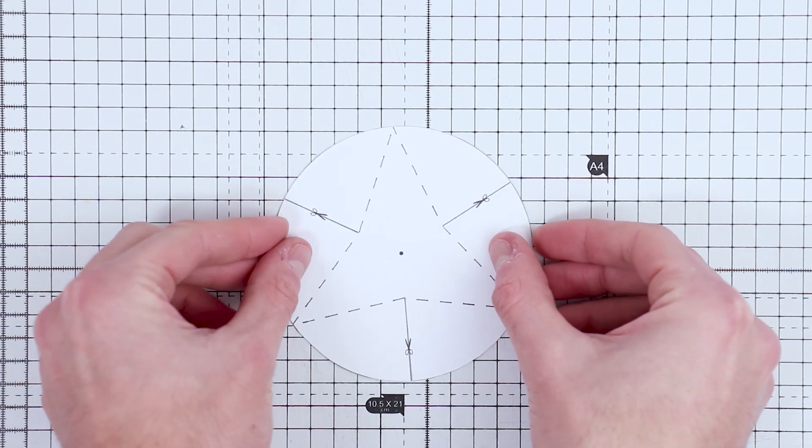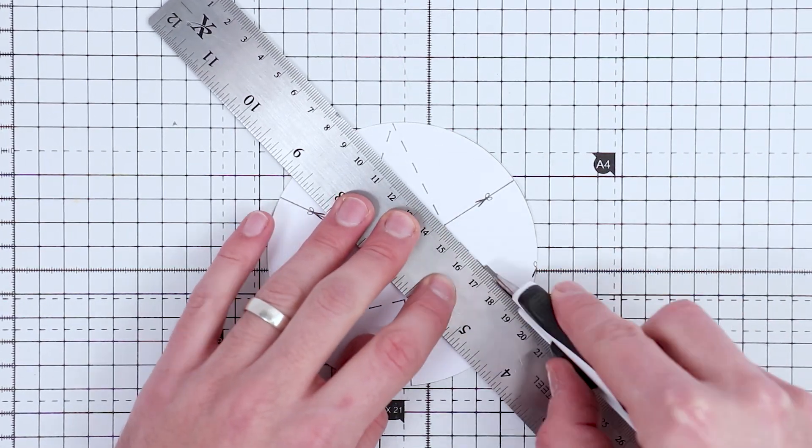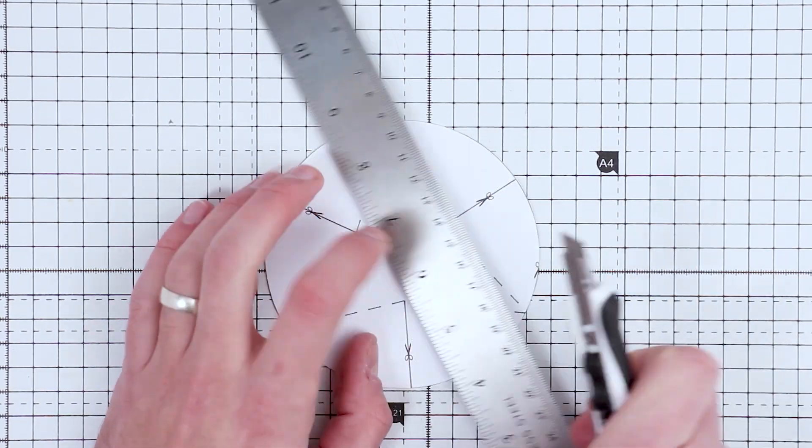Only cut up to the dashed score lines. Now using a cutting mat and a craft knife, gently score along the dashed lines, being careful not to cut all the way through the card.